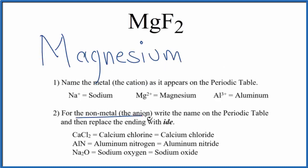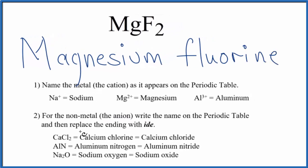Next, we write the name for the non-metal as it appears on the periodic table. F, that's fluorine, and we replace the ending with ide.